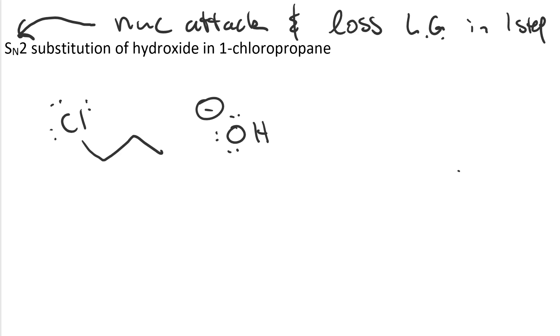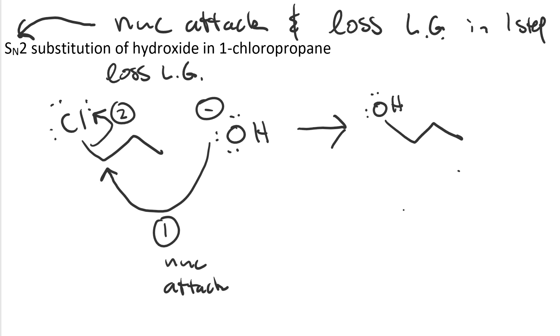The hydroxide ion is a good nucleophile. The chloride ion is a good leaving group. Arrow number one is nucleophilic attack. Arrow number two is loss of a leaving group. Our product here is 1-propanol and a chloride ion.